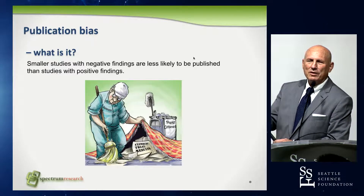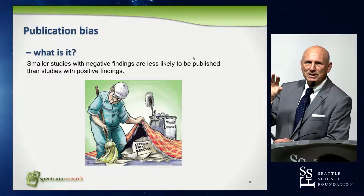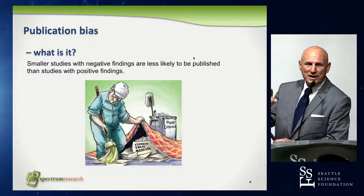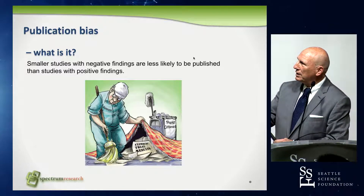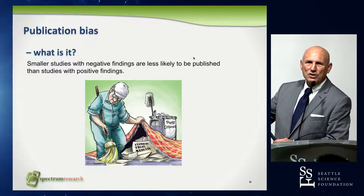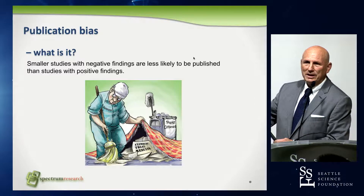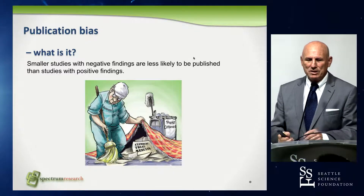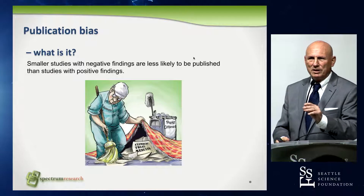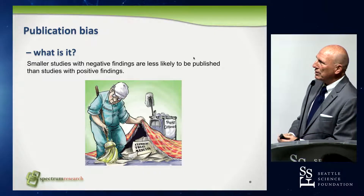One of the criteria we'll circle back to is this idea of identifying what studies are excluded and making sure you report why you excluded those studies. Let's look at another potential criterion for evaluating the quality of a systematic review: publication bias. What is publication bias? It's also called smaller study bias.